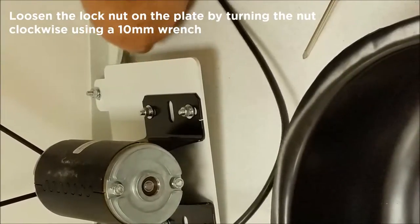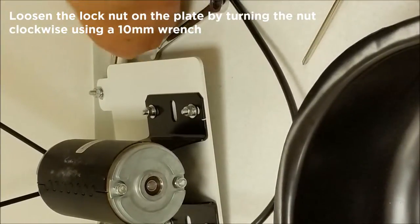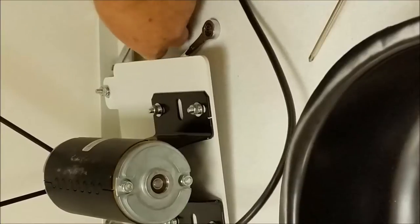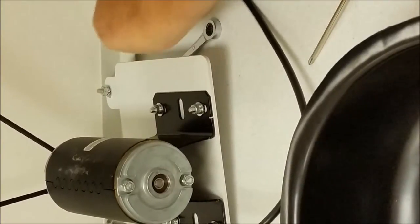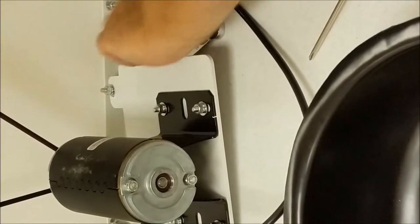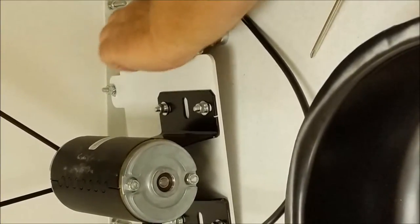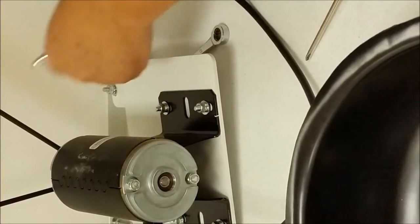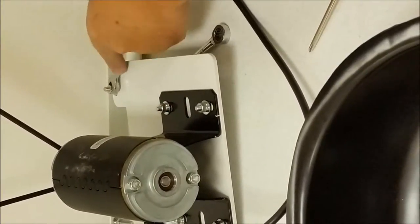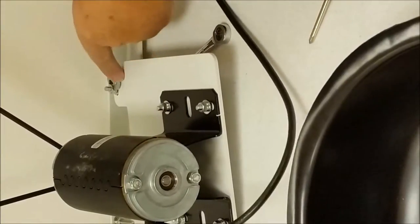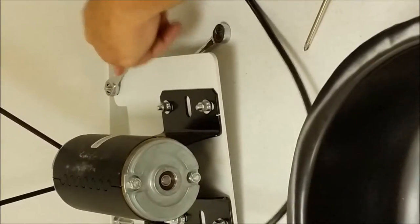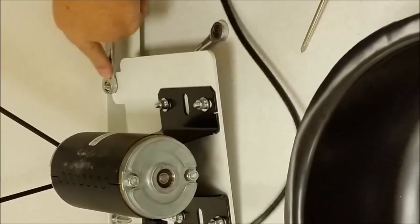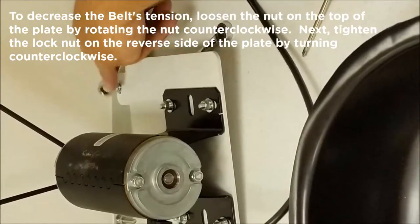These use a 10 millimeter open-end wrench. I've moved the threaded nut down about a quarter of an inch, and then I'll tighten this nut on top. That moves the plate downward, increasing the tension on the belt.